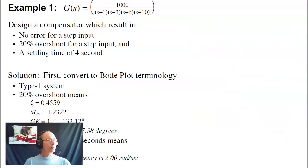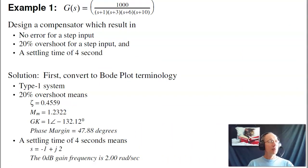As an example, suppose I had this system, and I want to design a compensator to meet the following requirements. I want no error for step input, I want 20% overshoot for the step response, and a settling time of 4 seconds. Now the first thing you need to do is convert that to the Bode plot terminology.